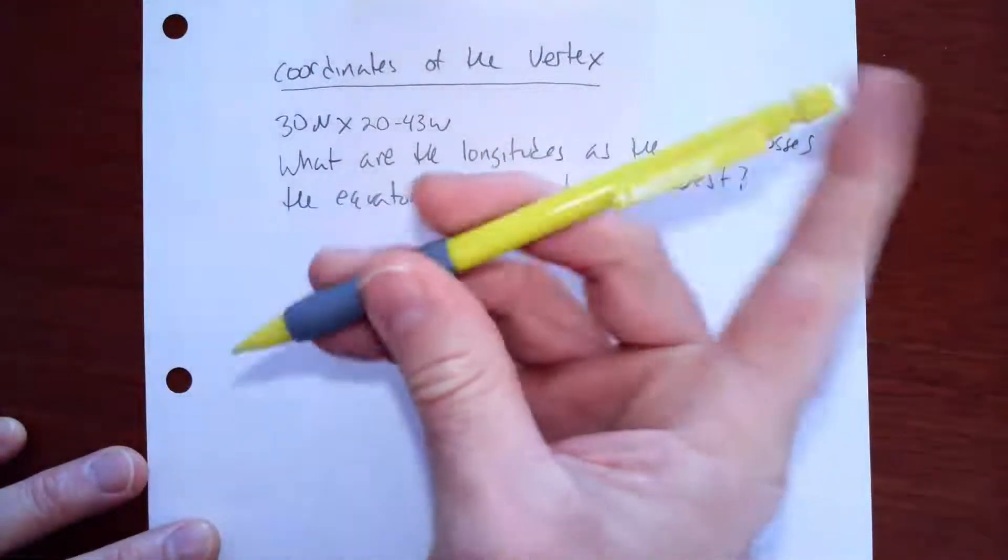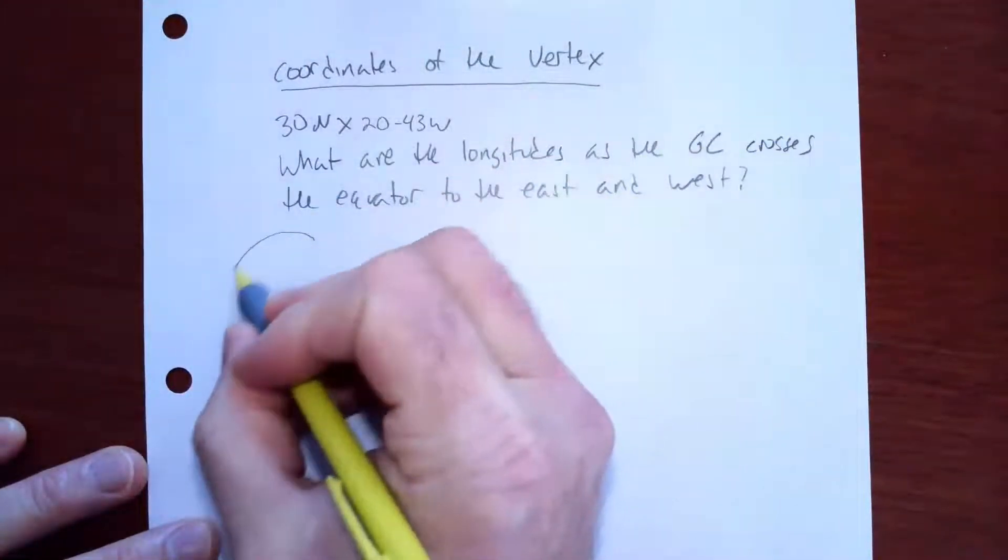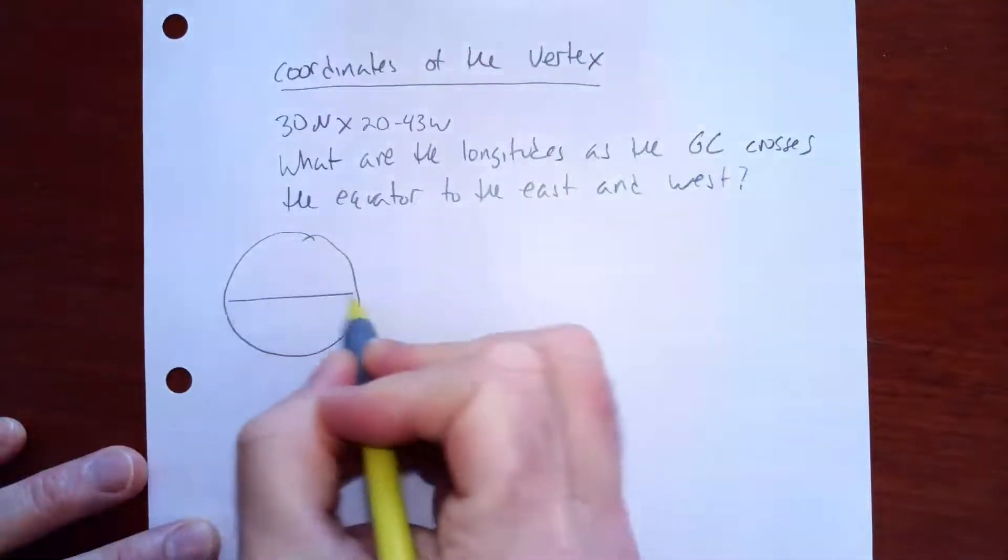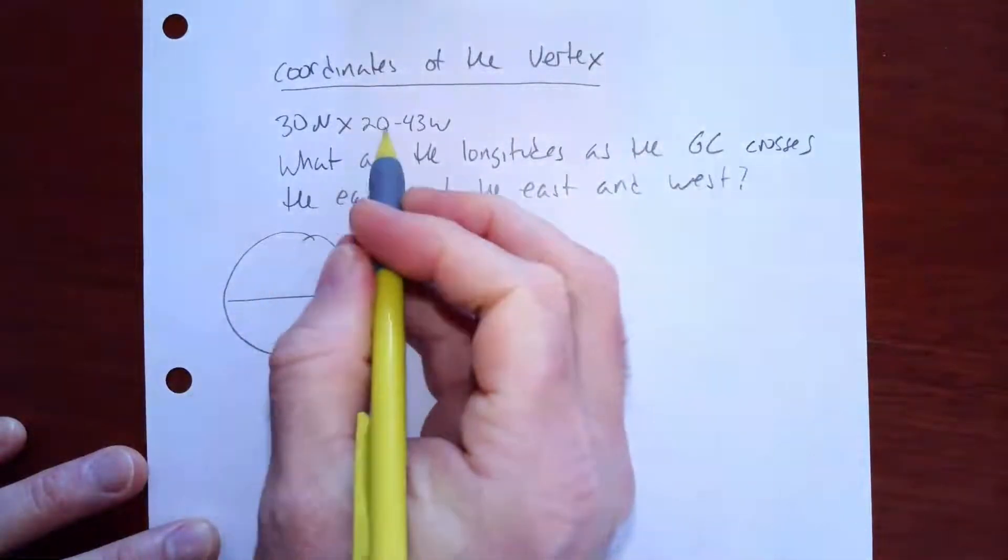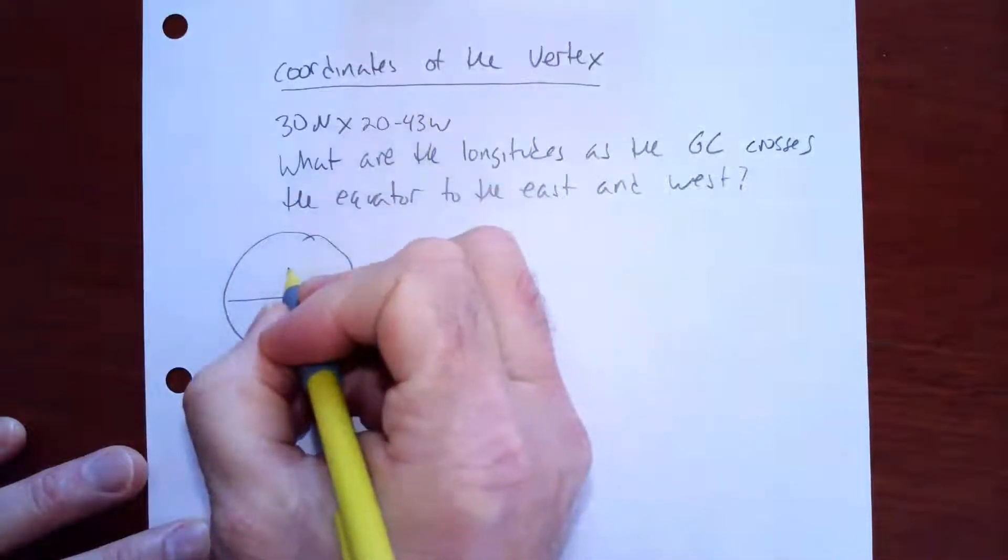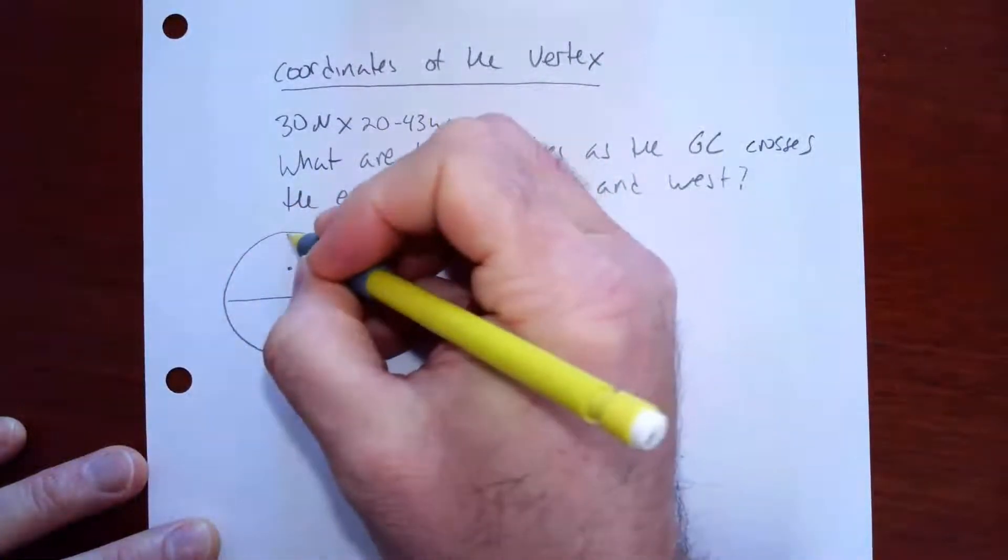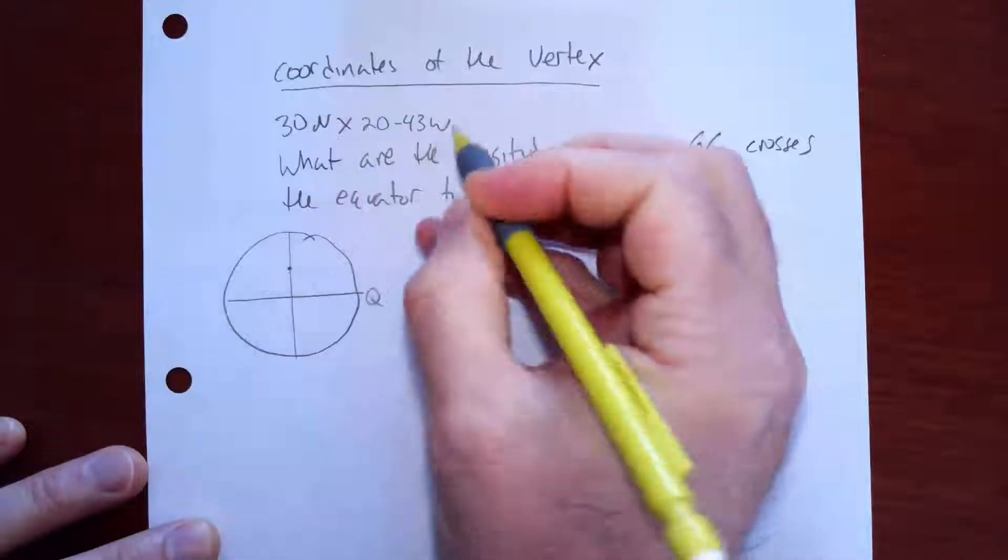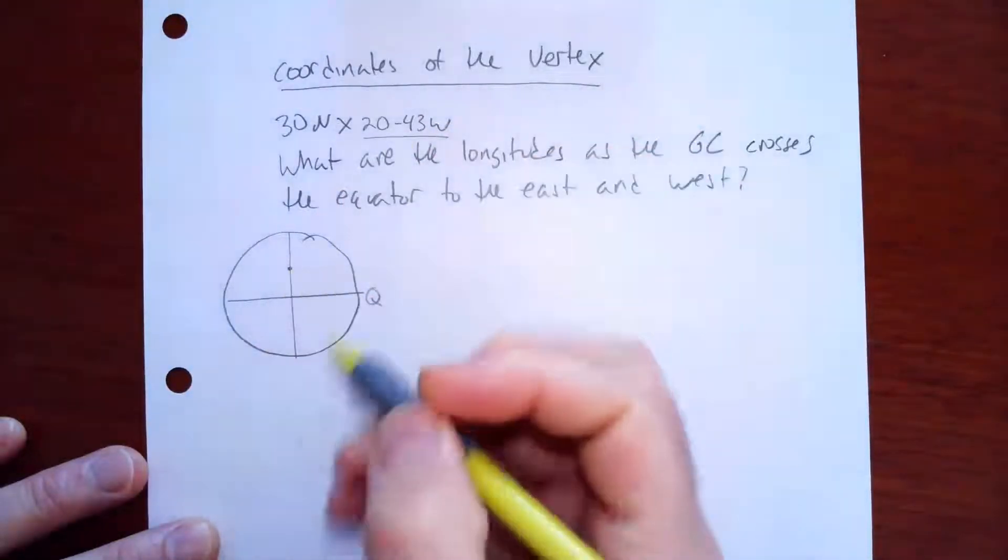So I'm just going to draw a quick picture here. This picture represents the equator, and we're at 30 north, 20 43 west, so I'm just going to put a dot here. And then this line here represents my longitude, and of course, that's about 30 degrees north.